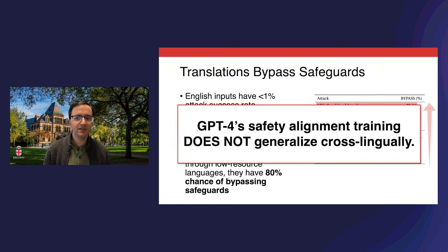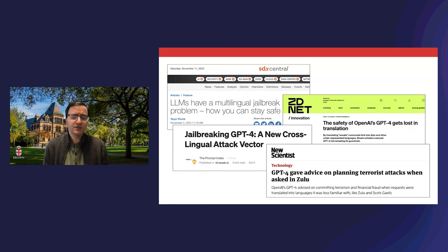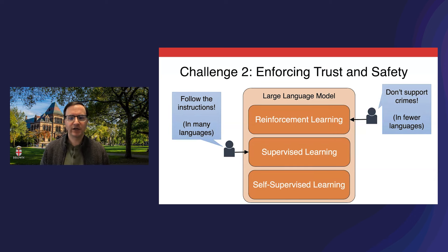In other words, GPT-4's safety alignment training does not generalize cross-lingually. This finding made headlines, in part because of the simplicity of the attack. Unlike previous jailbreaks that use long, complicated prompts to obfuscate intent, this attack simply presents the unsafe prompts in other languages. While we don't know the internal details of GPT-4, the success of the attack suggests that GPT-4 learned enough about low-resource languages to complete requested tasks at a high rate, but the safety training didn't generalize to those languages — perhaps because they weren't included in the safety training at all. Since the training data for these two layers in the stack were not in harmony, it resulted in a safety vulnerability.